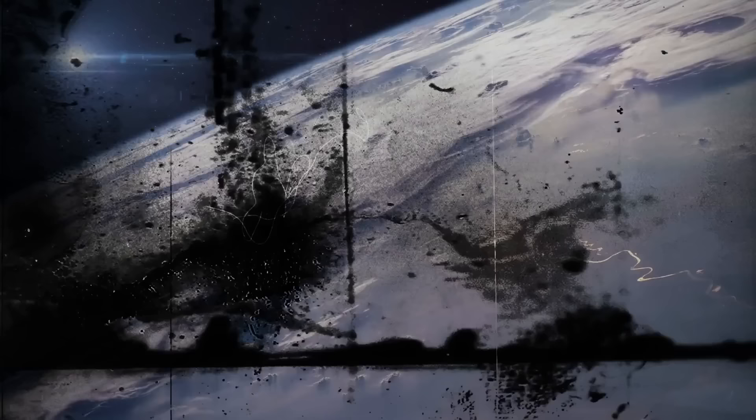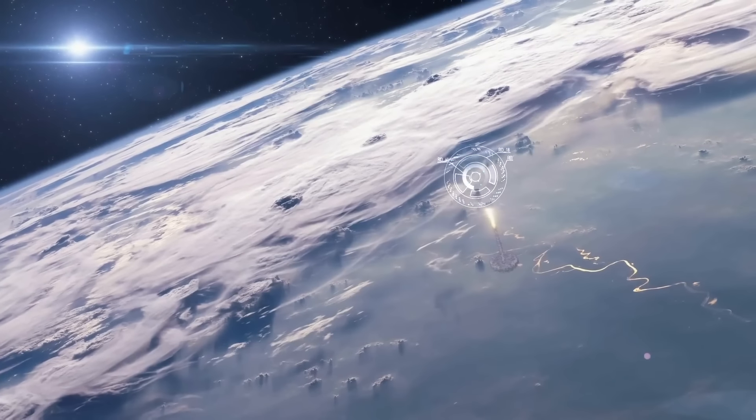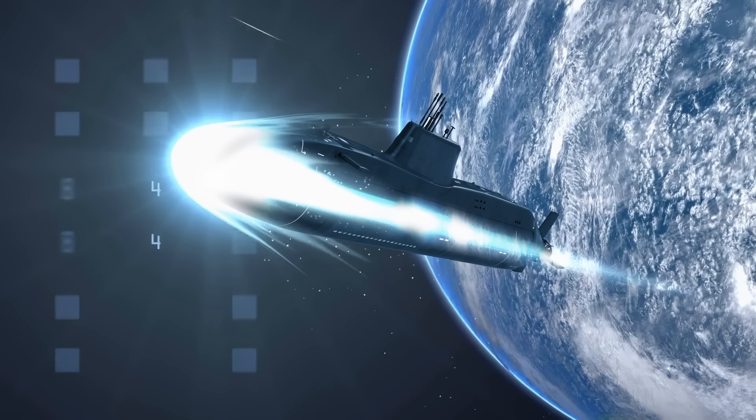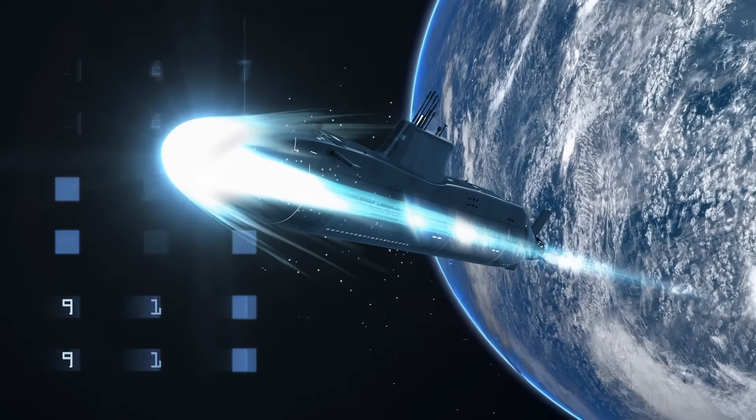Now, let's say you somehow managed to send your submarine into space, and now, you gotta get it out of orbit. How could you do it? To leave orbit, you'd need to slow it down enough to re-enter the atmosphere.